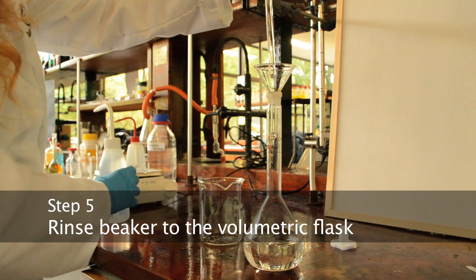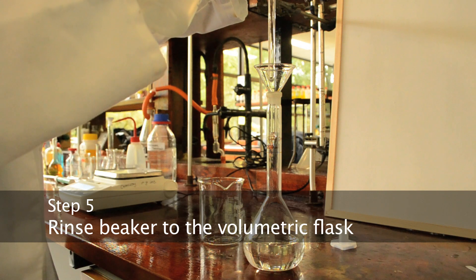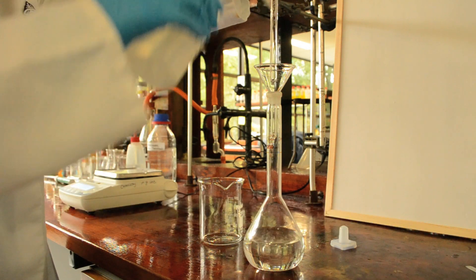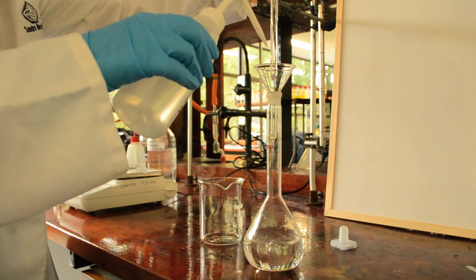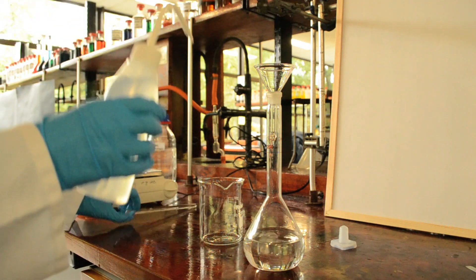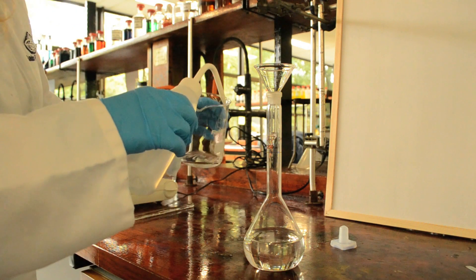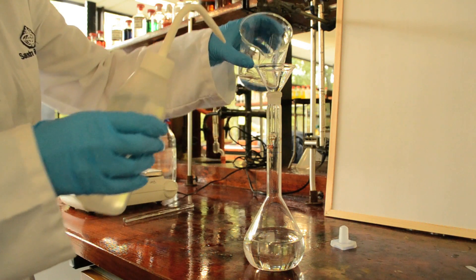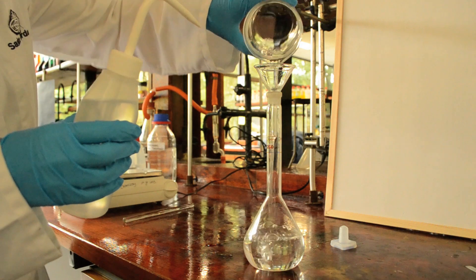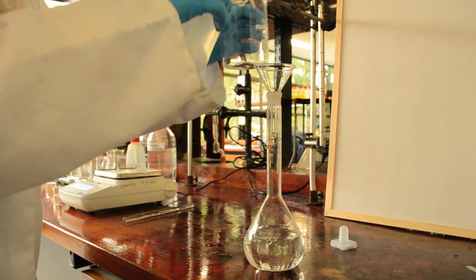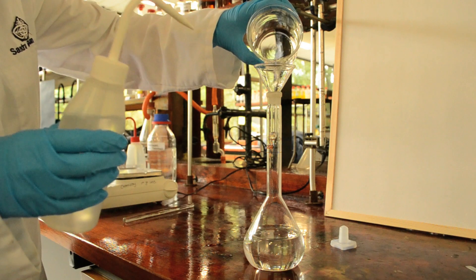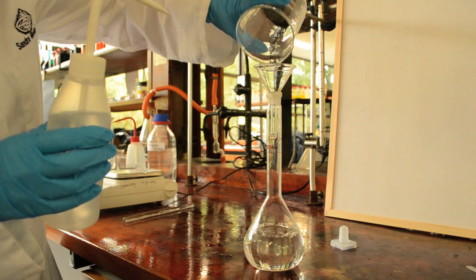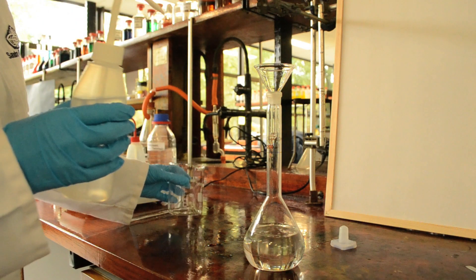Once I've done this, I ensure that every drop of solution makes its way in by rinsing the glass rod and the beaker fully. Now I know the exact quantity of sodium carbonate in the volumetric flask.